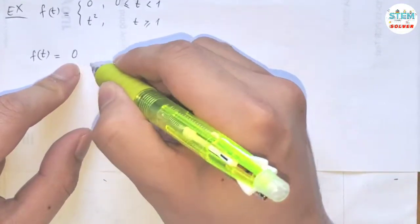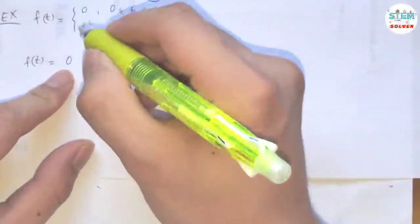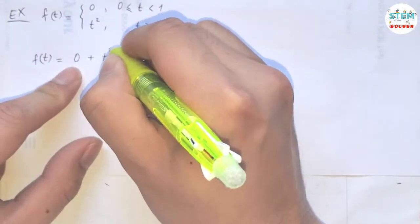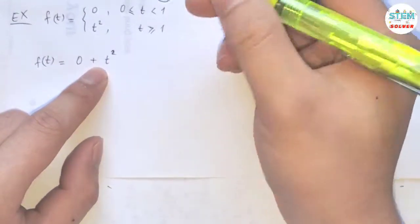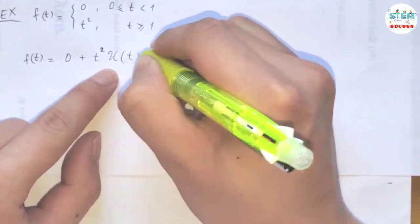From zero to one we have zero, our function is just zero. Then when t hits one, it becomes t squared, so we just have t squared. Then the unit step function comes into play, so we have u(t-1).